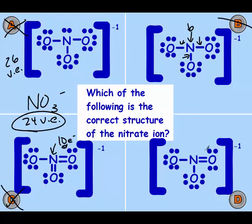And in this case we have 2, 4, 6, 8—so that looks good. And then I've used 24 electrons. So D is the correct structure for the answer.